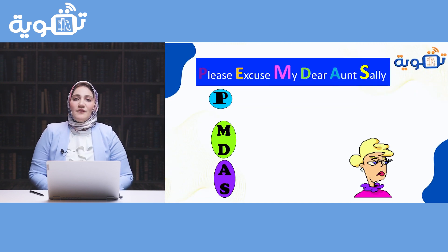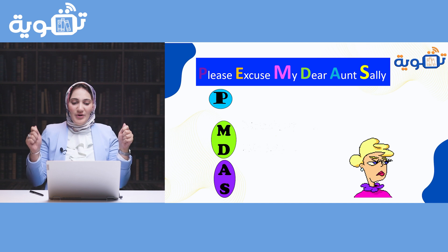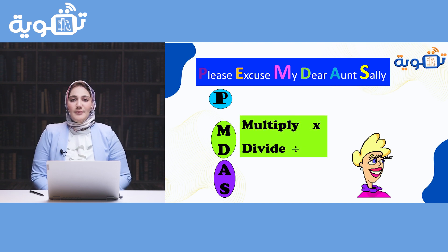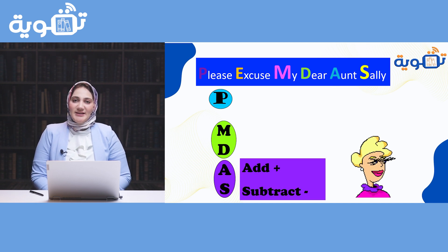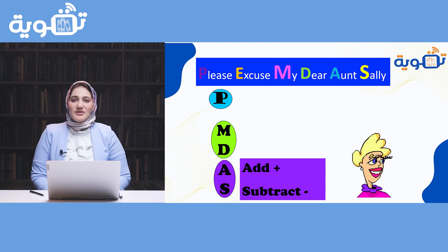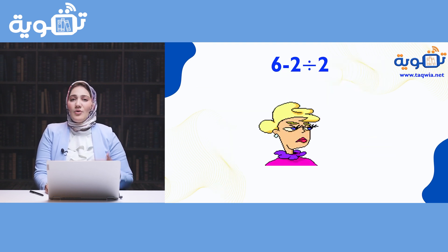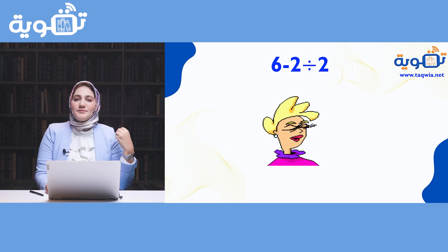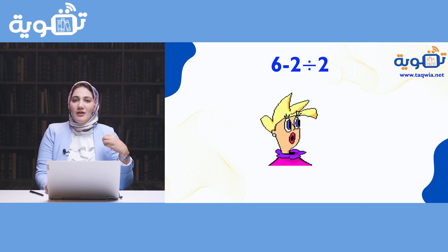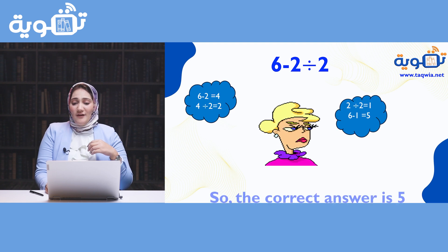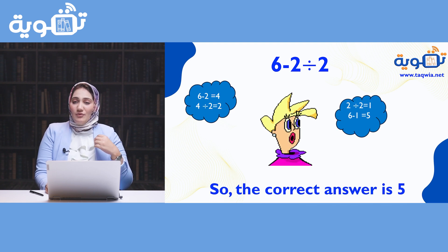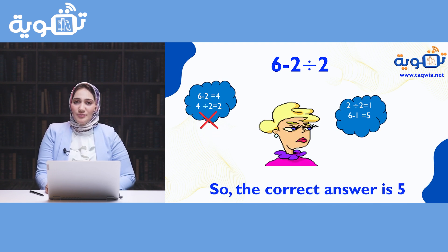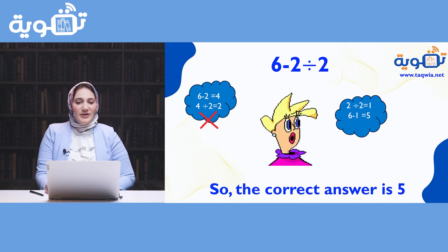Here P refers to parentheses or brackets, M is multiplication, D is division, A is addition, S is subtraction. So according to the PEMDAS acronym — 'Please Excuse My Dear Aunt Sally' — 5 is the correct answer and 2 is the wrong answer.